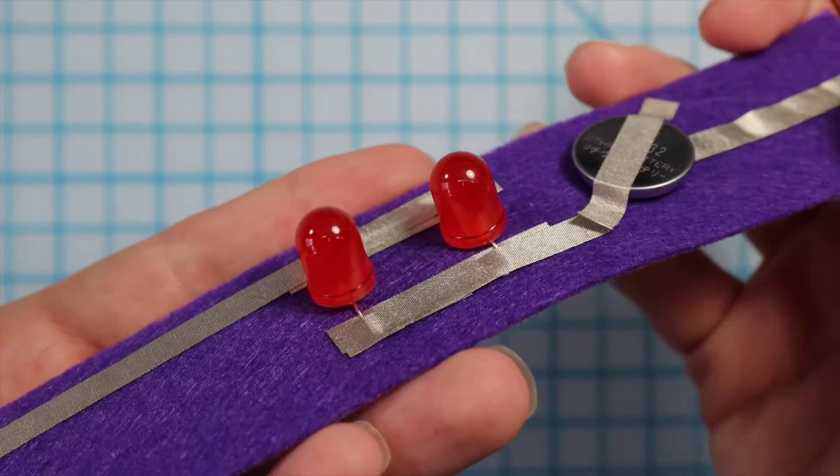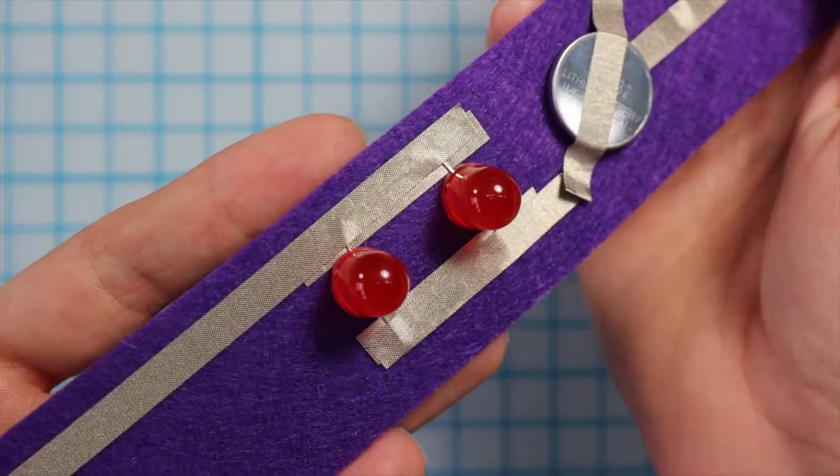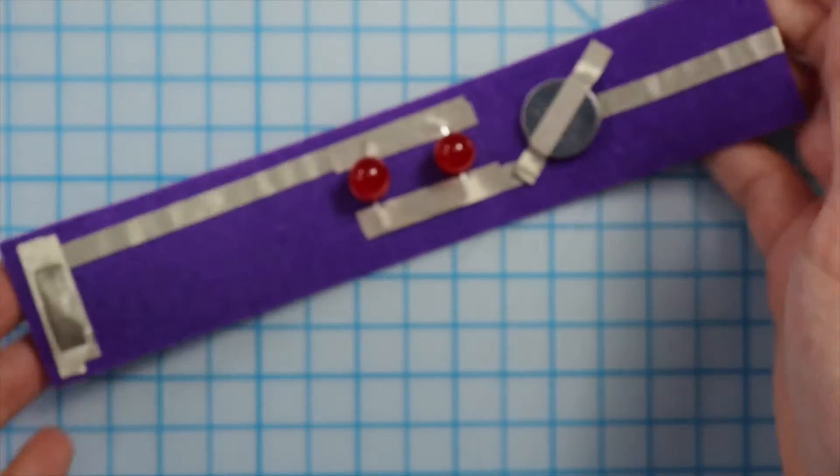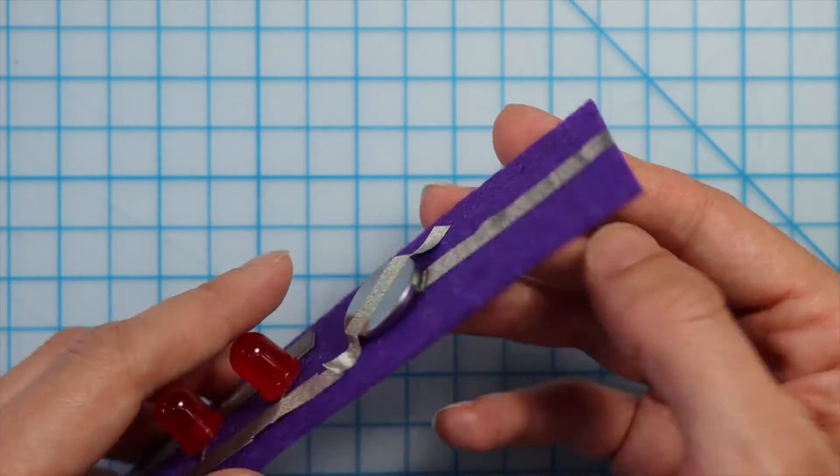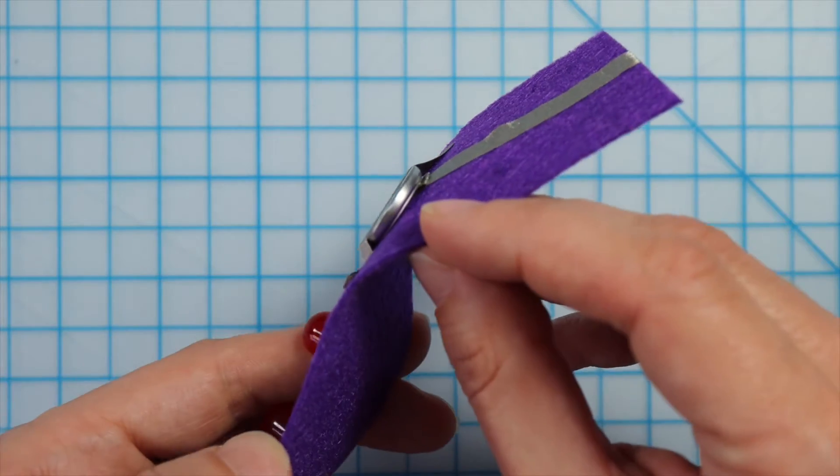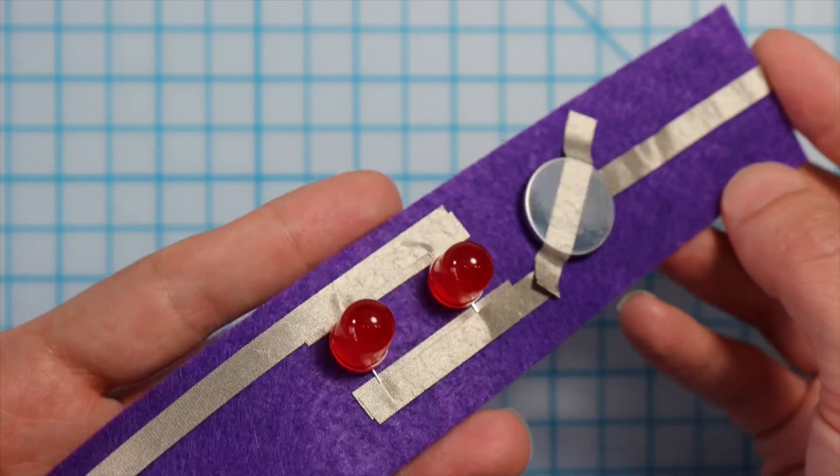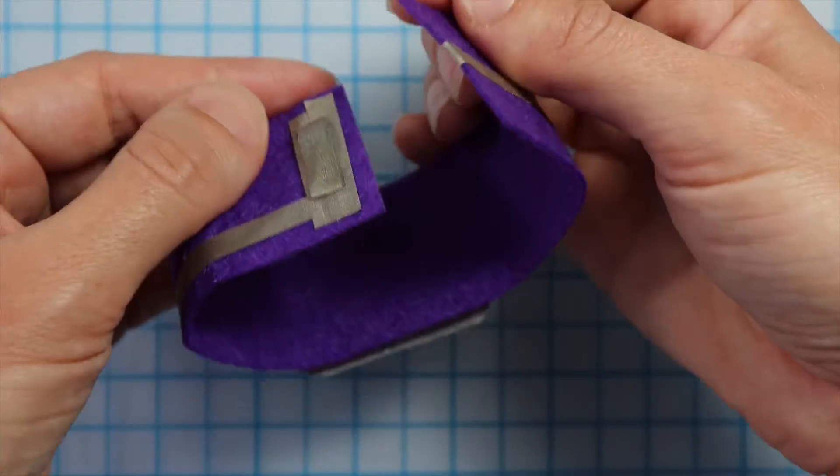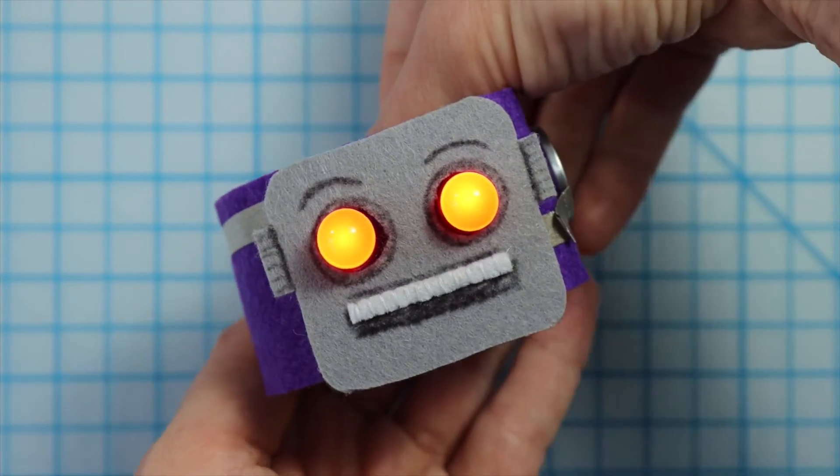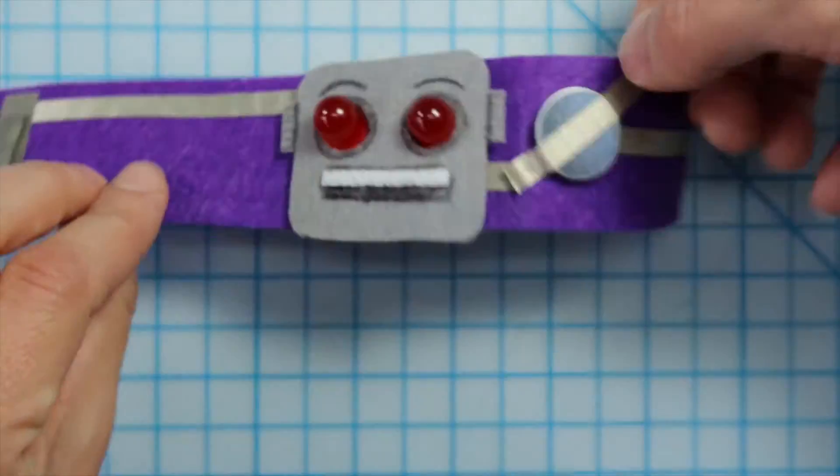Now that you see how to make a bracelet with one LED, making one with two LEDs is easy. This bracelet is the same as the first but two LEDs are connected in parallel so both LEDs are touching both positive and negative. Use the template to make a robot's eyes light up or dream up your own two LED design.